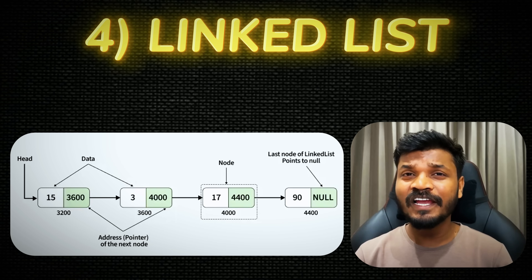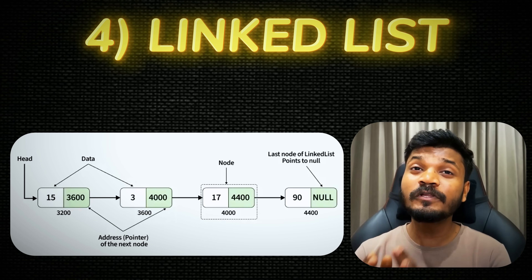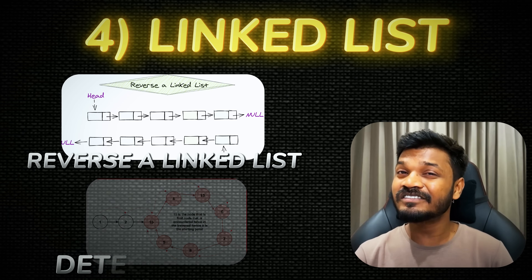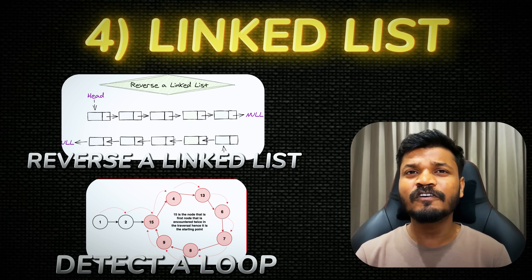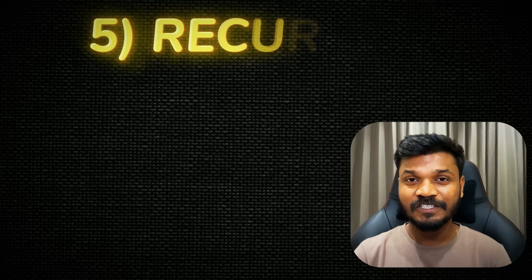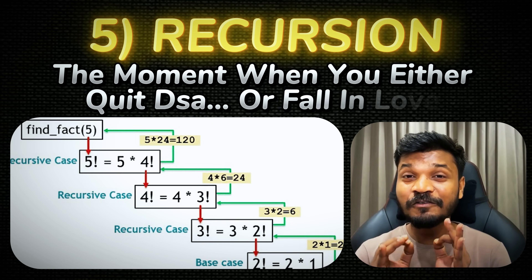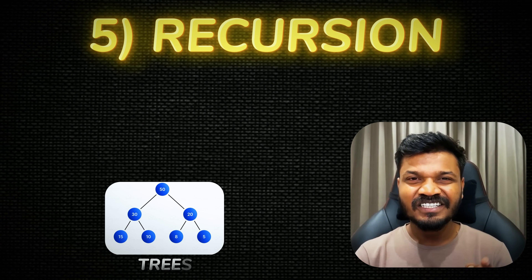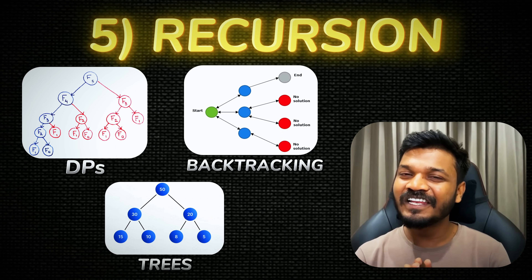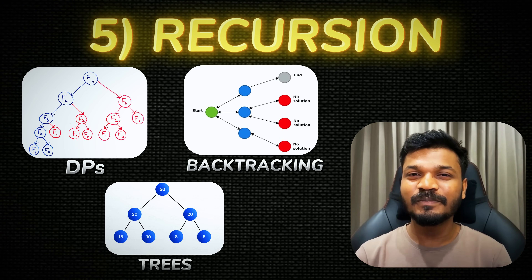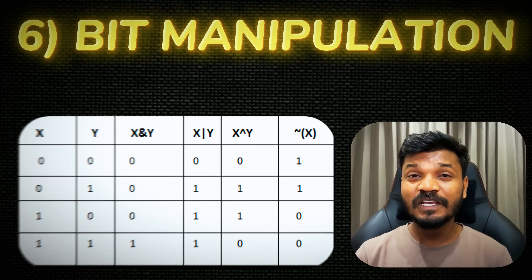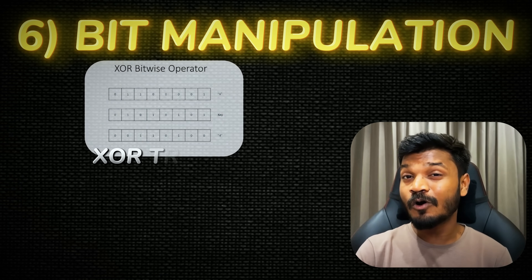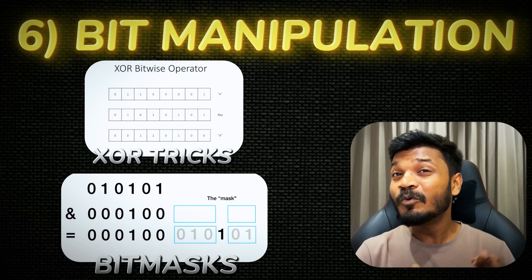Reverse a linked list, detect a loop — you'll struggle at first, but when it works, it clicks. Fifth: Recursion — the moment when you either quit DSA or fall in love with it. If you don't get this right, trees, DP and backtracking will feel impossible. Spend time here. Sixth: Bit Manipulation — the hidden gem. Interviewers love asking XOR or bit mask questions, and most people skip it.